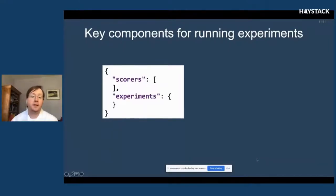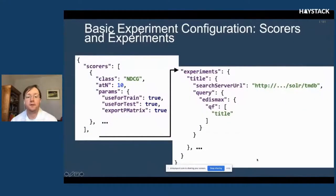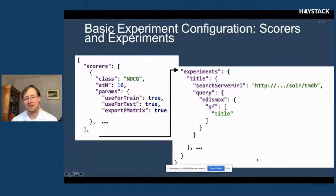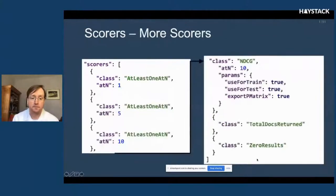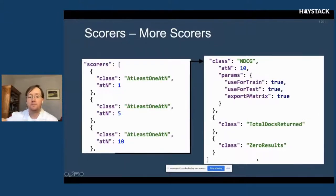The key components for running experiments in Quiŕita are scorers — an array of different types of scoring — and then a map of experiments. Scorers implement NDCG and a number of other things, including 'at least one at N' — meaning you got at least one target document at position 1, 5, or 10 — along with traditional precision, recall, and others. You also get rudimentary metrics like number of zero results and total docs returned, giving a broad sense of performance.